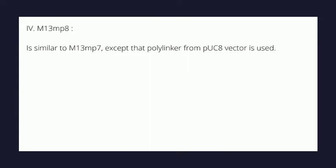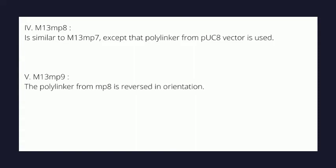The next member, mp8, is similar to mp7 except that its MCS is changed to the one from the pUC8 plasmid vector. Then mp9 is the same as mp8 except that the polylinker is reversed in orientation. mp8 and mp9 are sister vectors, very important in DNA sequencing, in which the unknown DNA is read forward using one vector and backward using the other. At a time, only 400 nucleotides can be sequenced using any M13 MP vector, but using the sister vector pair, double that size can be sequenced.